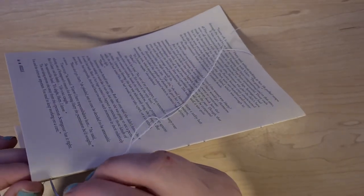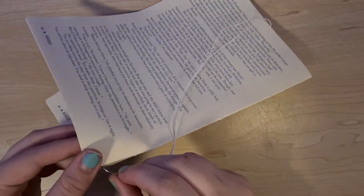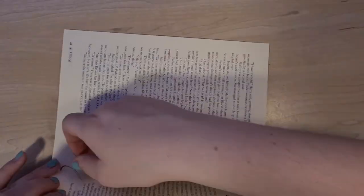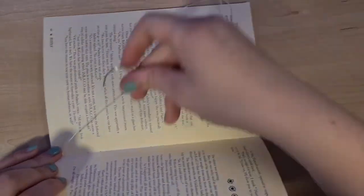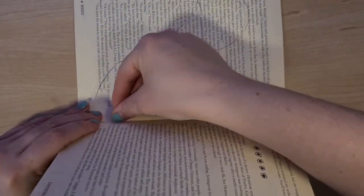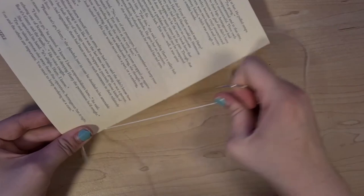For the first signature all you have to do is sew normally through the holes starting from the outside and then traveling through. Make sure you leave a two to three inch tail for the end of the thread because we'll be tying this off later.